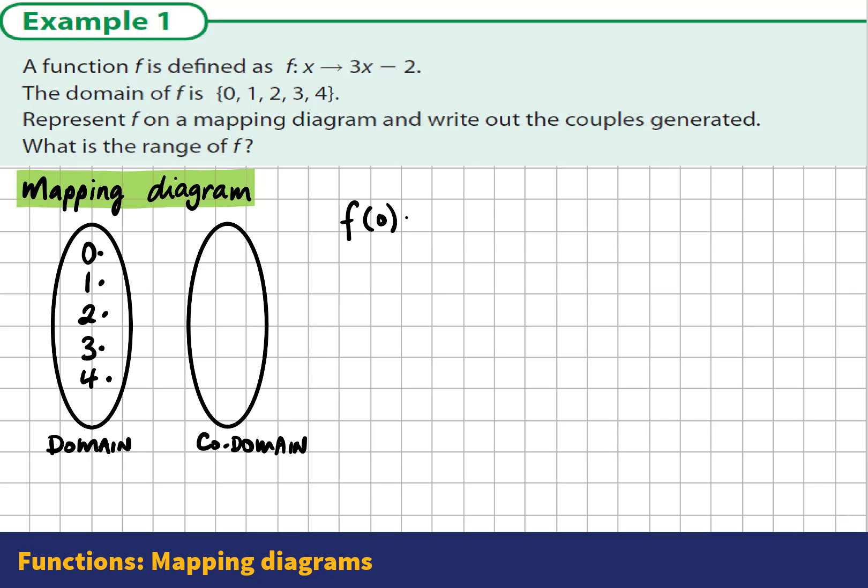Well, let's put a few inputs in and see what happens. When we input 0, we call this f(0). The rule is under the rule f that we multiply the input by 3, that's 3x, and take away 2.